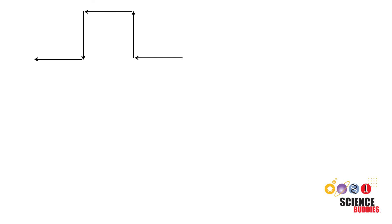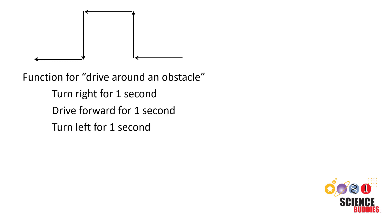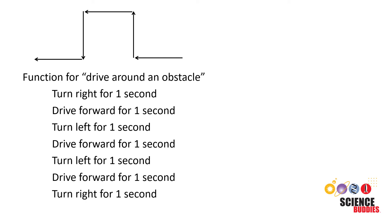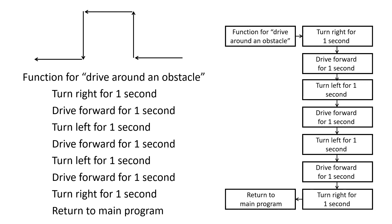We can represent that with both pseudocode and a flowchart. The pseudocode could be for a function to drive around an obstacle that consists of a series of hardcoded actions like turning and driving forward to drive in a certain shape. Finally, this function isn't a loop. So when it's done, we will go back to the main program. We can represent the same thing with a flowchart that just consists of a series of actions of turning and driving straight. And again, when that flowchart is over, we would go back to the main program.